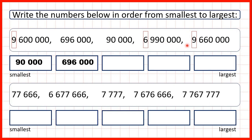So now if we look at the numbers we have left, we have 2 numbers with 9 in the millions, but this number here only has 6 in the millions. So that means 6,990,000 must be next smallest.